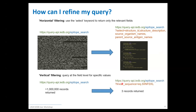So here you can see we filtered by the linear sequence equals SINFECL, and that returns three records — exactly what combining horizontal and vertical filtering gives you, effectively.